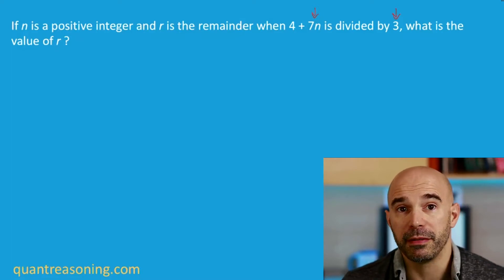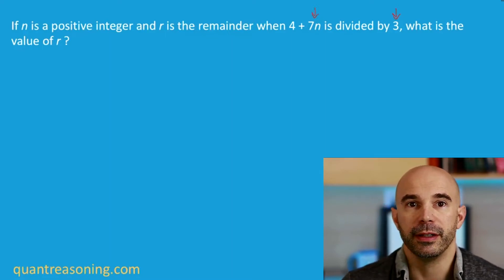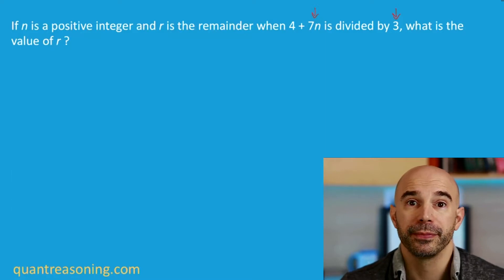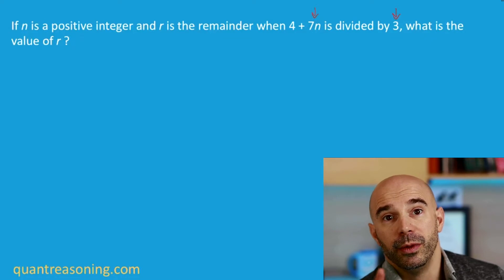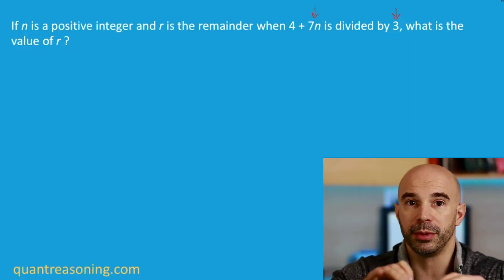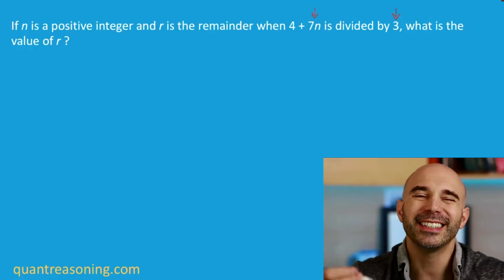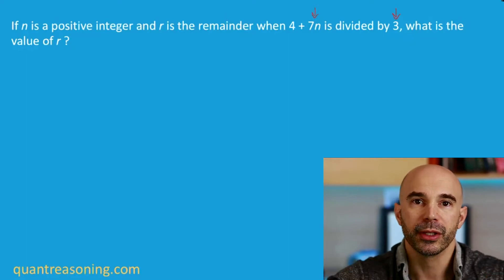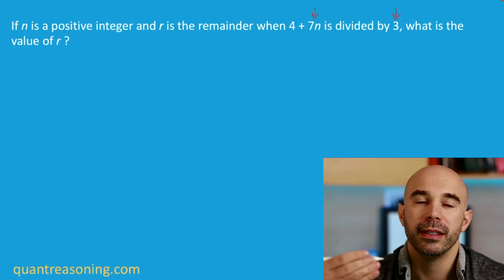That makes sense, because the greatest common factor of 3 and 7 is 1 — they have nothing in common. As a counterexample, if we're talking about a multiple of 3 and dividing that by 9, when you take a multiple of 3 and divide it by 9, the remainder will definitely be either 0, 3, or 6. Because 3 and 9 have a common factor of 3, there is something I can say about divisibility — I can narrow down the possible remainders.